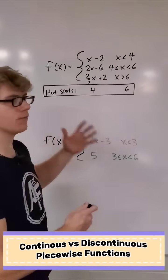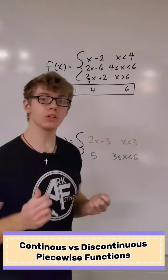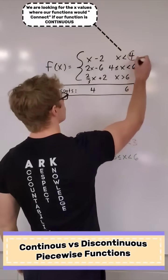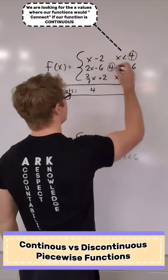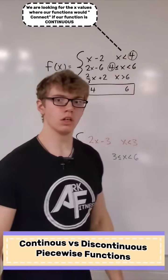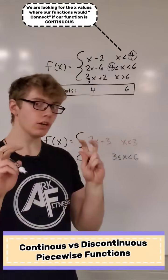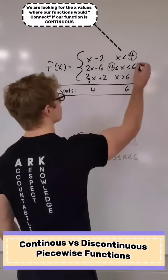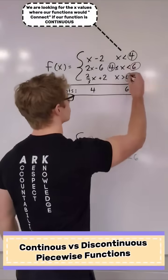Now we need to figure out the values in our domain that meet up. In this case, 4 and 4 are kind of shared between two different parts, and 6 and 6.